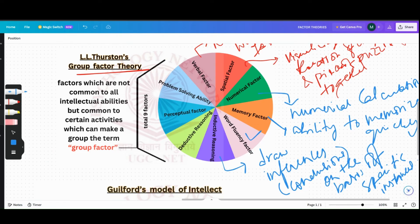Coming to Perceptual Factors, it is the ability to perceive objects accurately. Problem Solving - it is the ability to solve problems independently. So this was your Group Factor Theory.